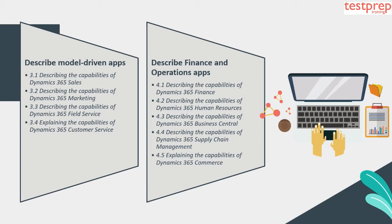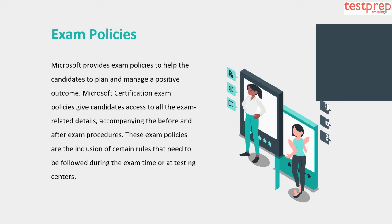Topic 4: Describe Finance and Operations Apps. This includes: 1. Describing the capabilities of Dynamics 365 Finance. 2. Describing the capabilities of Dynamics 365 Human Resources. 3. Describing the capabilities of Dynamics 365 Business Central. 4. Describing the capabilities of Dynamics 365 Supply Chain Management. 5. Explaining the capabilities of Dynamics 365 Commerce.